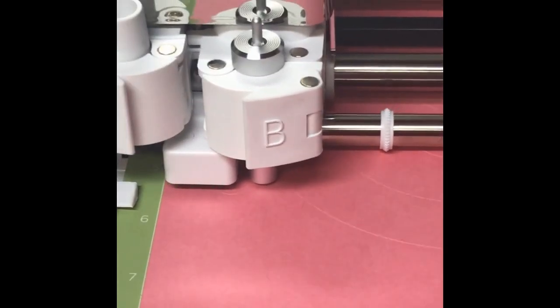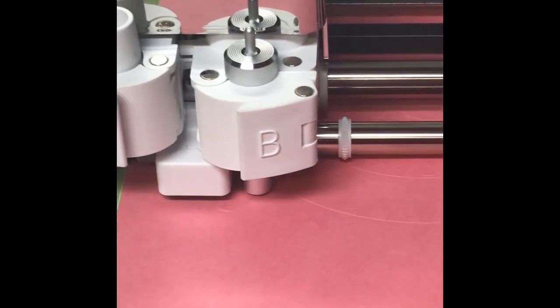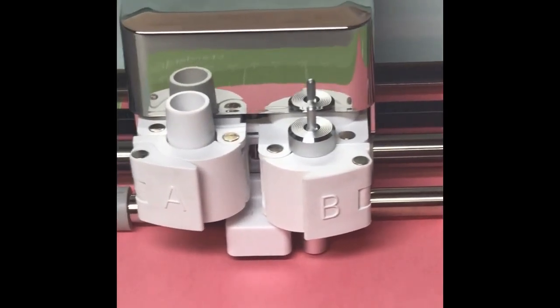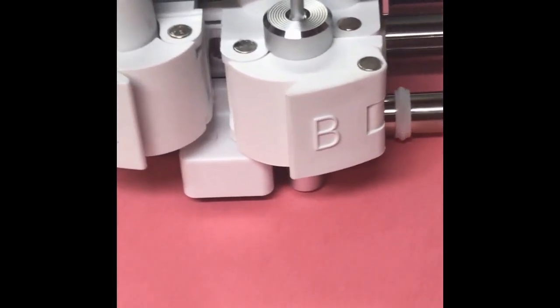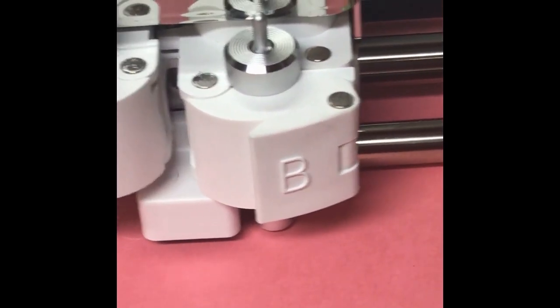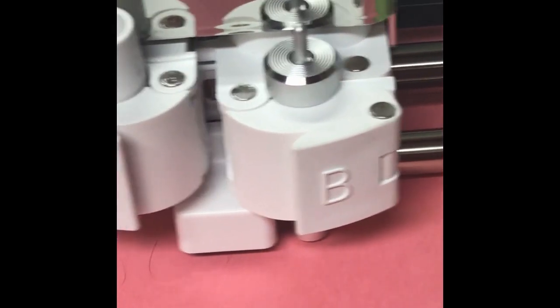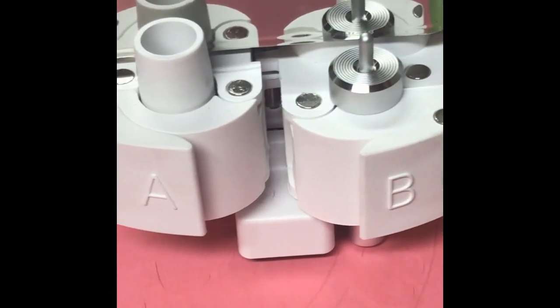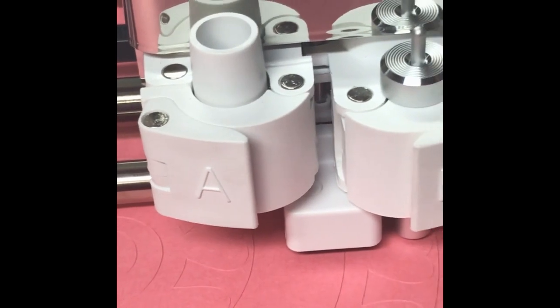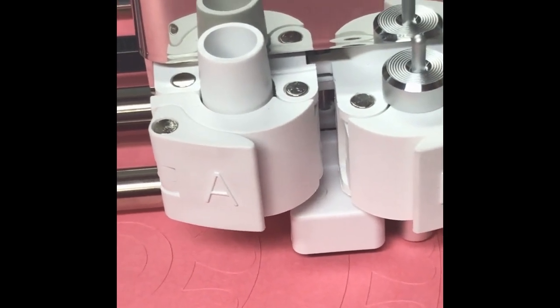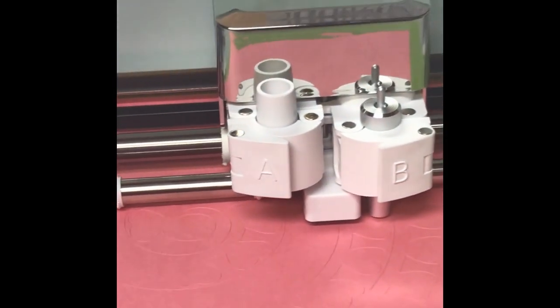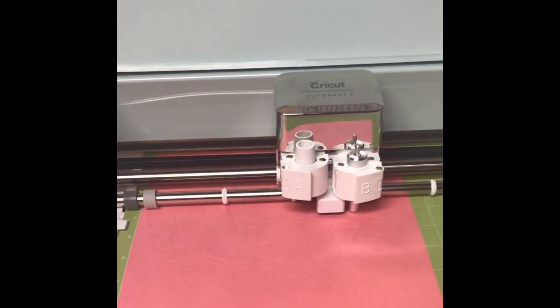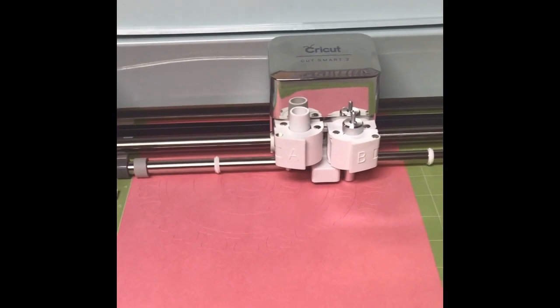So if it doesn't cut properly then you have to adjust the pressure of the blade. You can increase or decrease according to your wish. Now our cutting is done. Now we have to take the mat out of the machine.